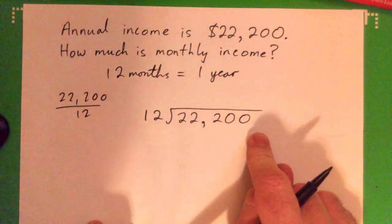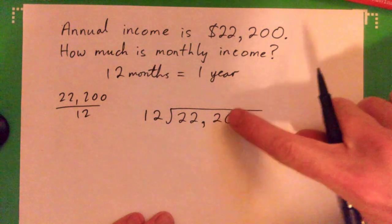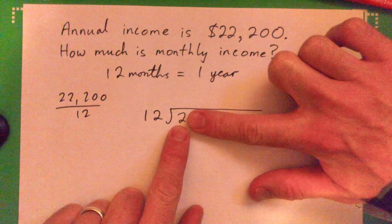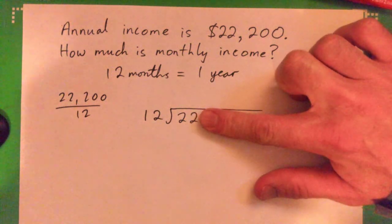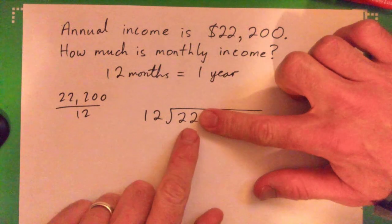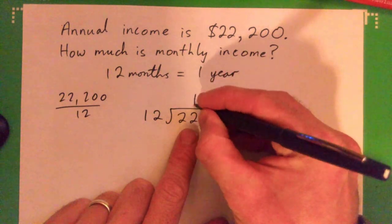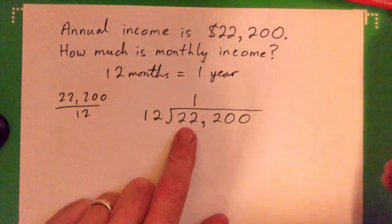So have you got your long division set up? We'll go through it step by step. We block off this, and 12 does not go into 2, but does 12 go into 22? How many times? Good job, yes, once. Because two twelves is 24, so 22 is less than 24.